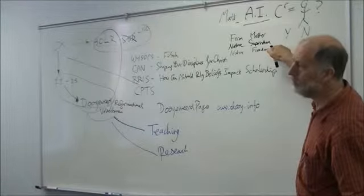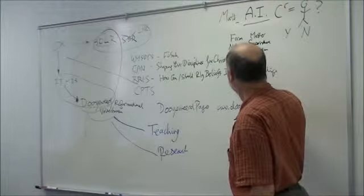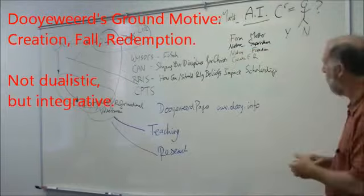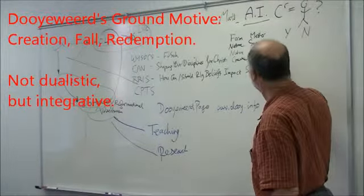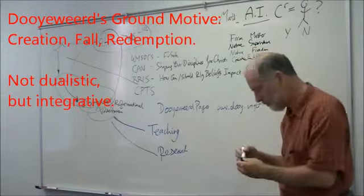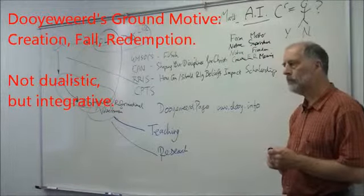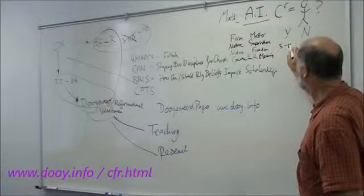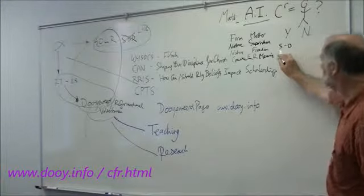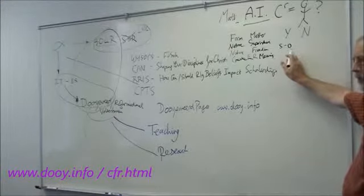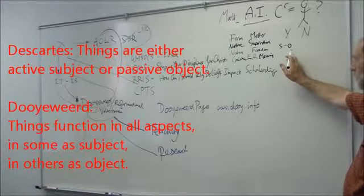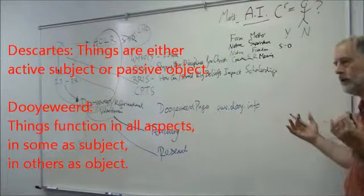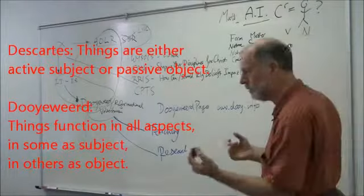Which suggests that the fourth ground motive of creation, fall and redemption, of Dooyeweerd, I don't actually like that term, I call it meaning, the meaning ground motive. Now, Dooyeweerd introduced a new type of subject-object relationship. Whereas Descartes says, the subject is active and the object is passive, Dooyeweerd said, we operate both as subjects and objects in response to the laws of all the aspects. Everything can be a subject and everything can be an object.